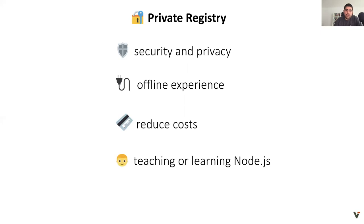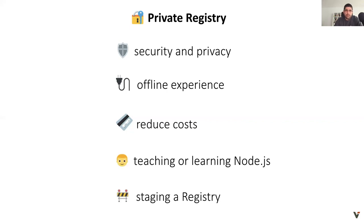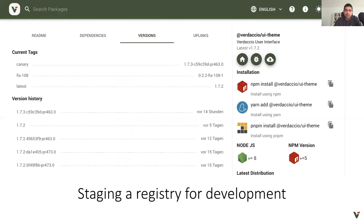For those who are learning Node.js, teaching it is hard if you cannot use a registry. npm.js is not made for that scenario — you cannot spam it with fake names or use it offline. A staging registry is one of the best reasons to host one, because you might have the need to publish snapshot or calendar releases that need to be hosted somewhere to be consumed by other parts of your app.